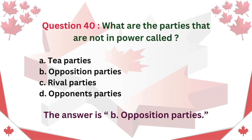Question 40. What are the parties that are not in power called? A. T. Parties B. Opposition parties C. Rival parties D. Opponents parties. The answer is B. Opposition parties.